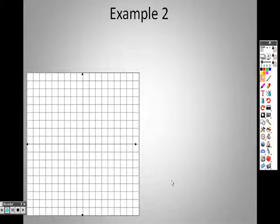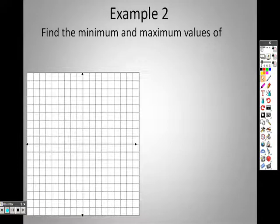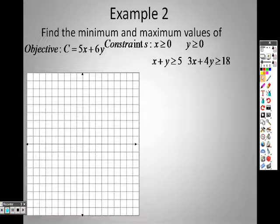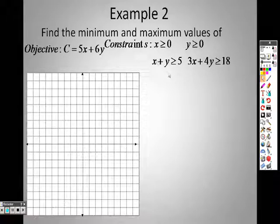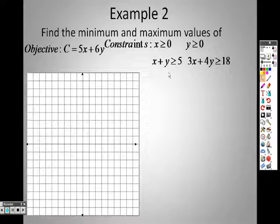Alright, so continuing 3.4 here on linear programming, I'm on example 2, and I want to find the max and minimum values. So I'm giving you the objective function, and I'm giving you a set of constraints. So we need to solve these constraints, so let's take a look.